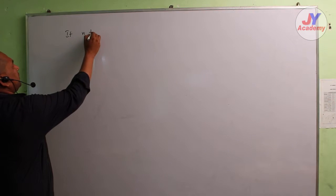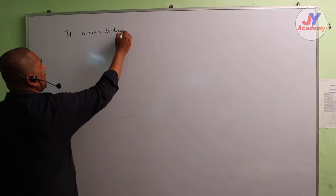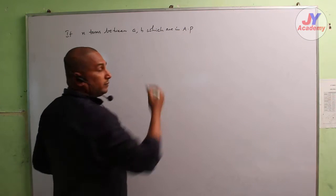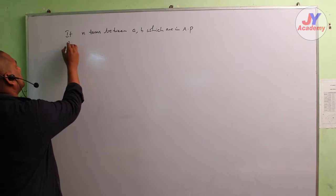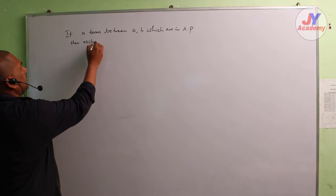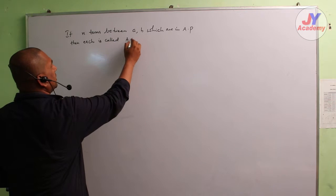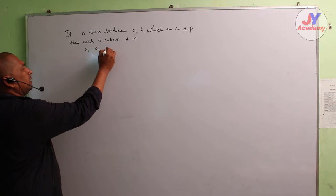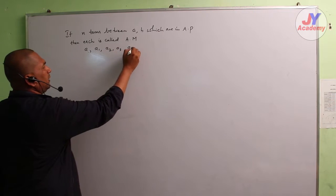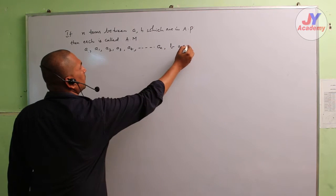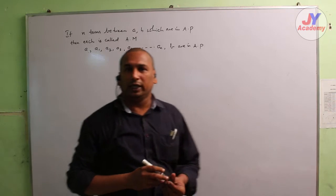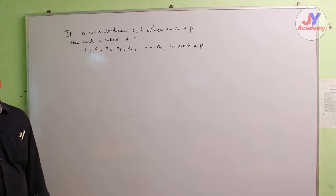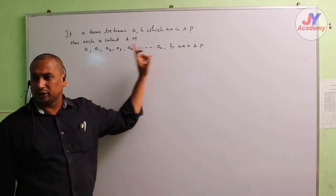If n terms between a and b are in arithmetic progression, then each is called an arithmetic mean. So a, a1, a2, a3, a4, and so on, an, b are in AP. This means that in any AP, except the first term and the last term, the remaining terms are called arithmetic means.